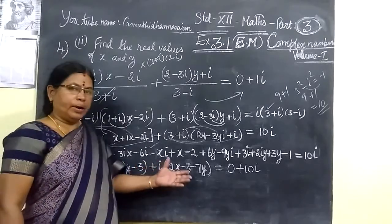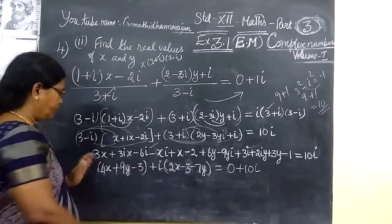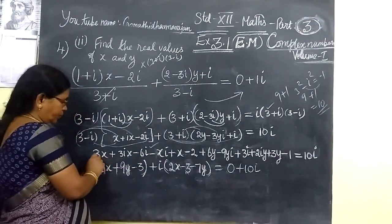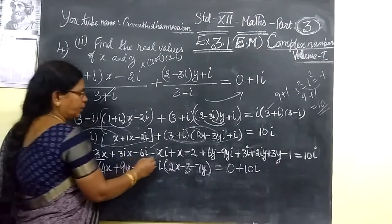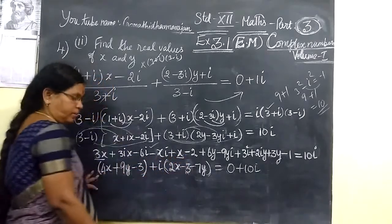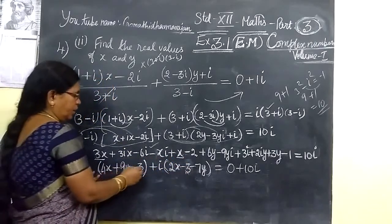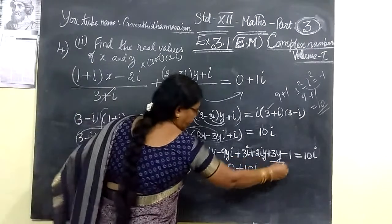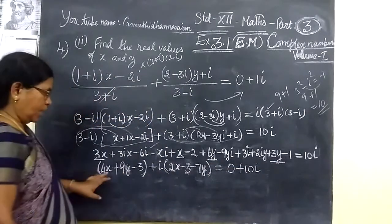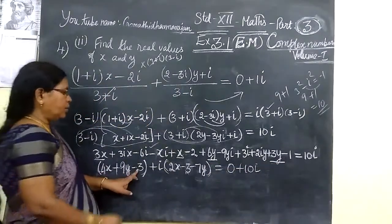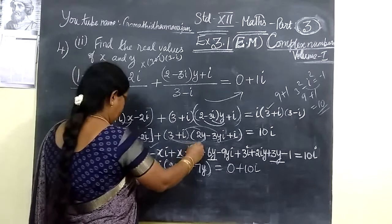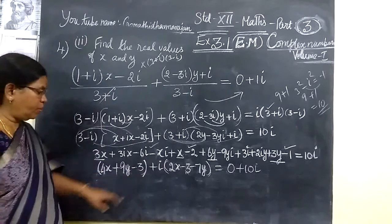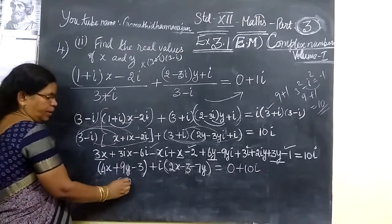Now you are collecting the real part. In the real part, you have 3x, then minus 1 gives 4x. Then you come to the y term: you get 6y, then 3y, so 9y. For the constants, you have minus 2 then minus 1, giving minus 3. So the real part is 4x plus 9y minus 3.